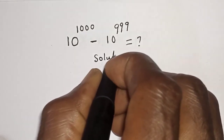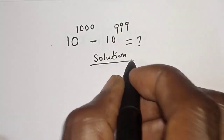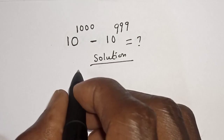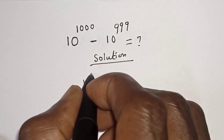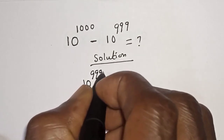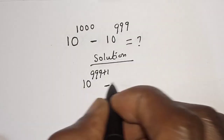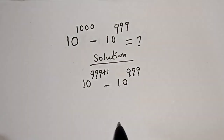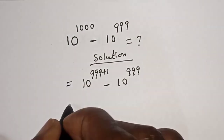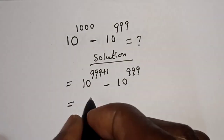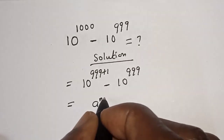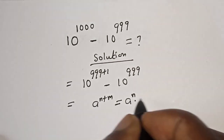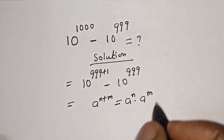Solution. 10 raised to power 1000 can be written as 10 raised to power 999 plus 1. Take note of this rule: a raised to power n plus m is equal to a raised to power n multiplied by a raised to power m.